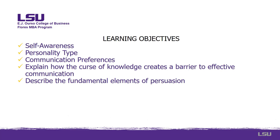Our objectives: we're going to discuss self-awareness, personality types, and communication preferences. We're going to talk about the curse of knowledge and how that creates a barrier to effective communication. And we'll also describe ethos, pathos, and logos — the fundamental elements of persuasion.